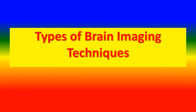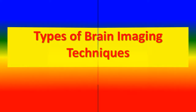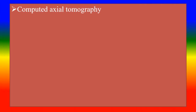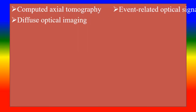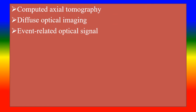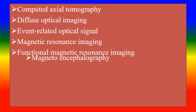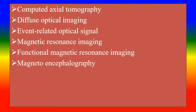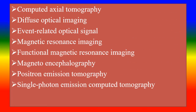The types of brain imaging or neuroimaging techniques include: Computed Axial Tomography, Diffuse Optical Imaging, Event Related Optical Signal, Magnetic Resonance Imaging, Functional Magnetic Resonance Imaging, Magnetoencephalography, Positron Emission Tomography, Single Photon Emission Computed Tomography, Cranial Ultrasound, and others.